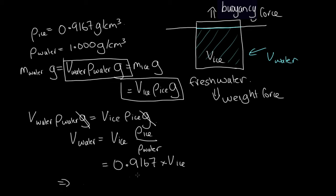So 0.9167 times the volume of the ice block is the portion that is underwater. To get it into a percentage, we multiply by 100, so 0.9167 times 100 tells us that approximately 92% is underwater. With salt water it's going to be a slightly lower percentage underwater because salt water is more dense than fresh water.